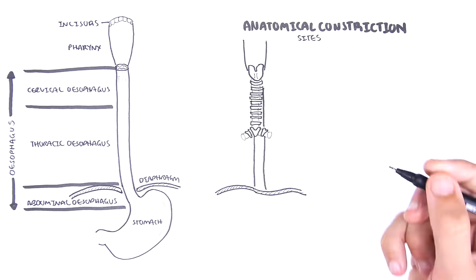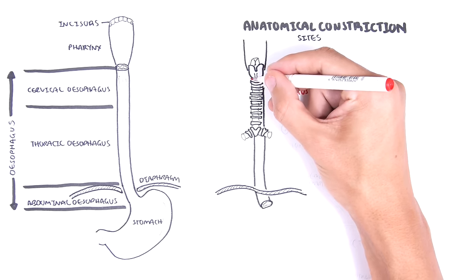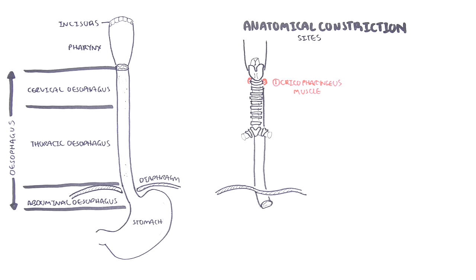The upper esophageal sphincter, which is the cricopharyngeus muscle, is here. This is the first narrow point.